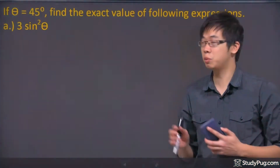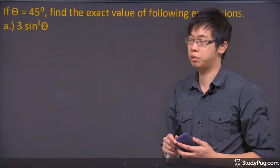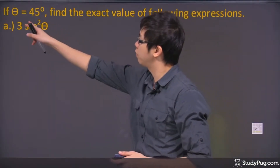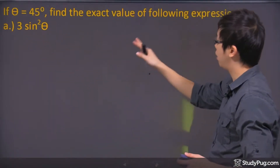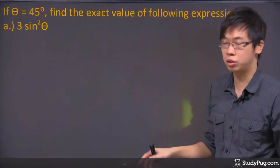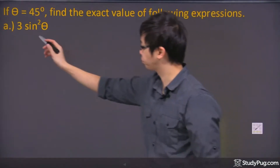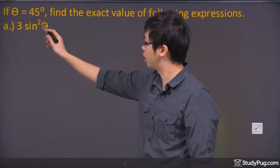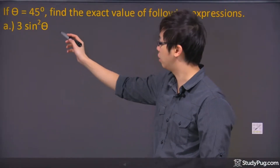Welcome to this question. We're dealing with special triangles. Here it says that if the angle is 45 degrees, find the exact value of the following expressions. What we have here is 3 and the sine squared of theta.